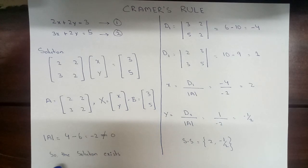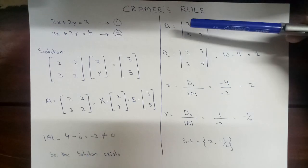First of all, we will determine the determinant of matrix A. 2 times 2 will be 4 minus 3 times 2 will be 6. 4 minus 6 is equal to minus 2. Now it is not equal to 0, so the solution exists. Remember, if the determinant of A would have been equal to 0, then the solution does not exist.